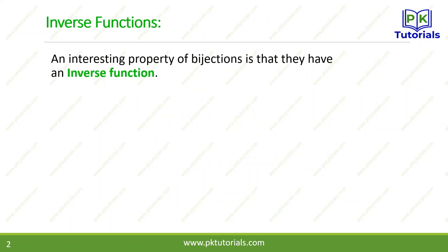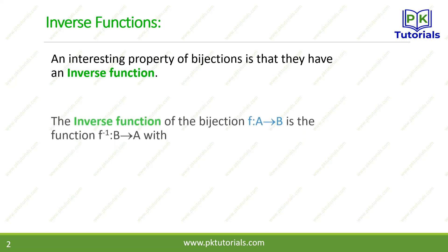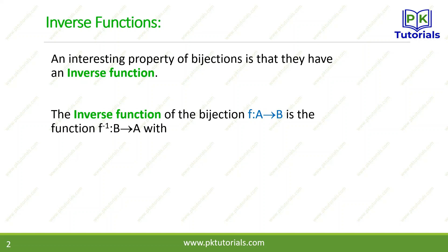What is an inverse function? It's an interesting property that a function can have an inverse. The inverse function is defined for a bijection. If A maps to B is the function, then we have an inverse function. If we have a function from A to B, the inverse maps from B back to A.